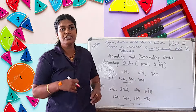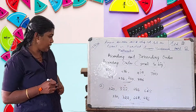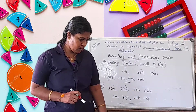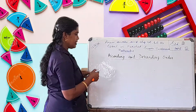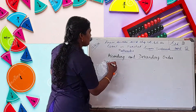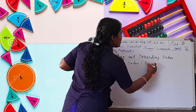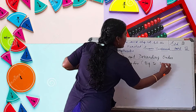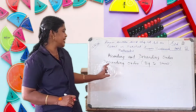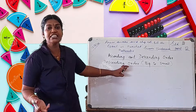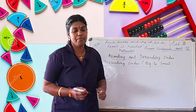Ascending order means small to big. Descending order means big to small. Next is descending order — also called decreasing order. Descending or decreasing order goes from the biggest number down to the smallest.